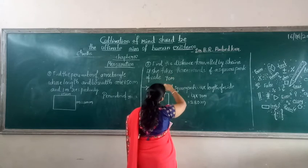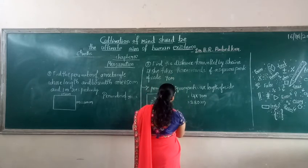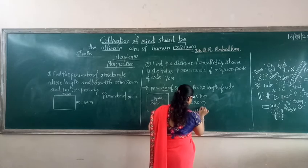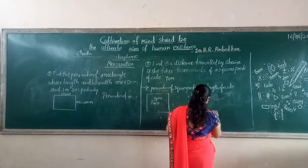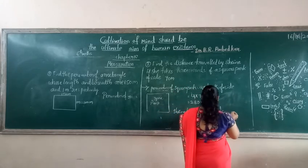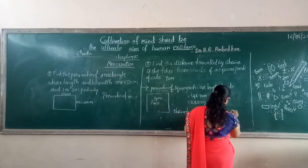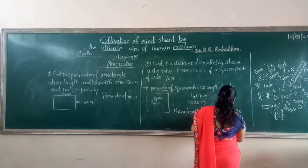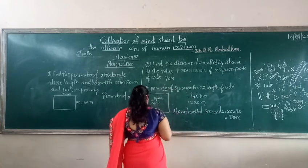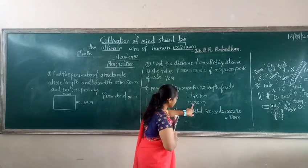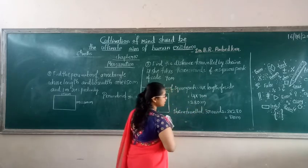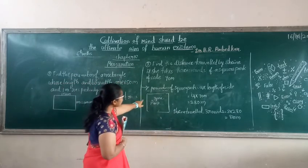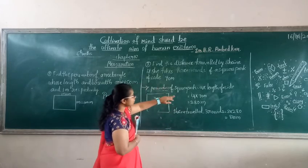Therefore, the distance traveled in three rounds: China traveled three rounds, so that is 3 into 280, which equals 840 metres. For one round it is 280 metres and for three rounds it is 840 metres. This is how we identify the perimeter of a square — that is 4 into the side, which is 4 into 70.